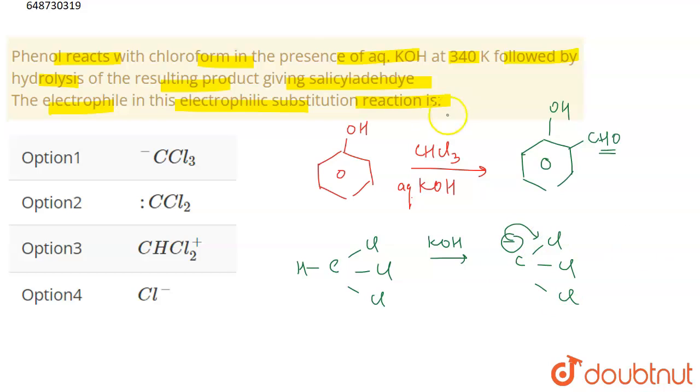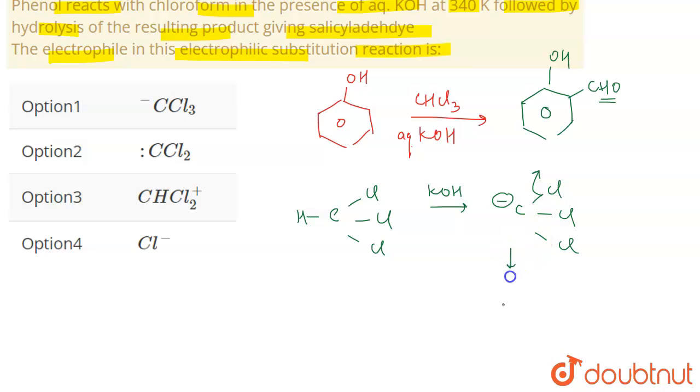Due to this minus charge that is developed on carbon, what happens is that this bond shifts and what do we get as a result? We get CCl2.